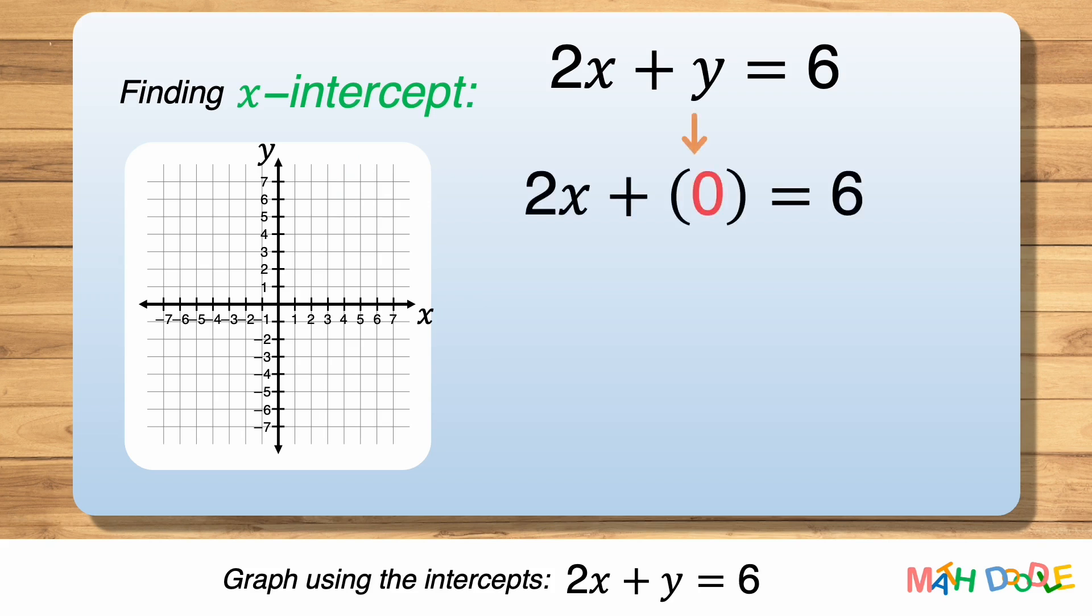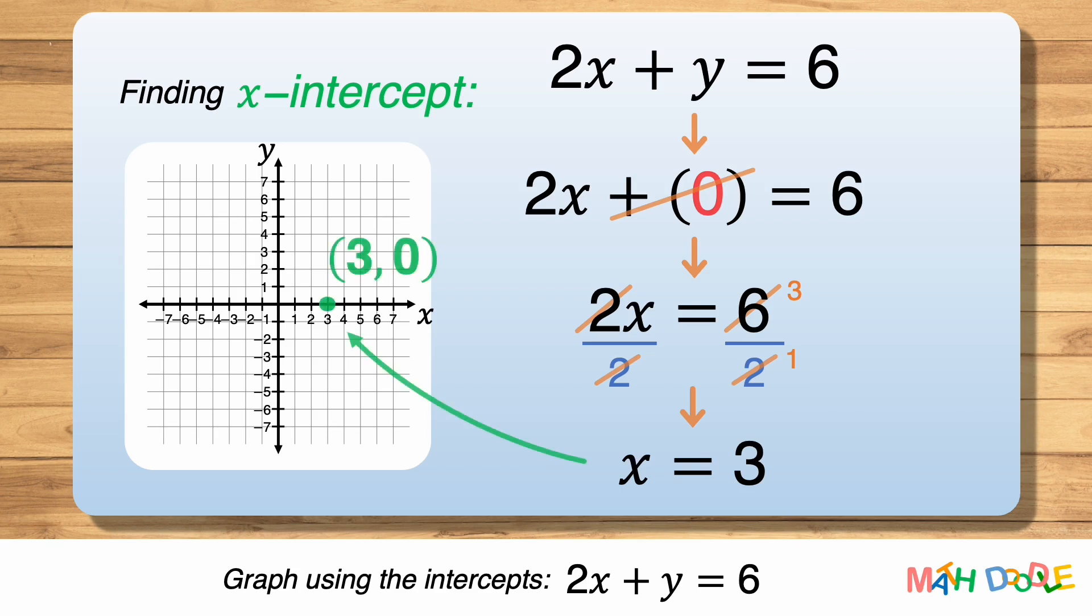2x plus 0 equals 6. The equation can be simplified to 2x equals 6. After dividing both sides by 2, the equation becomes x equals 3. So when y is 0, x is 3. This tells us that the line has the x-intercept (3, 0), where the line crosses the x-axis.